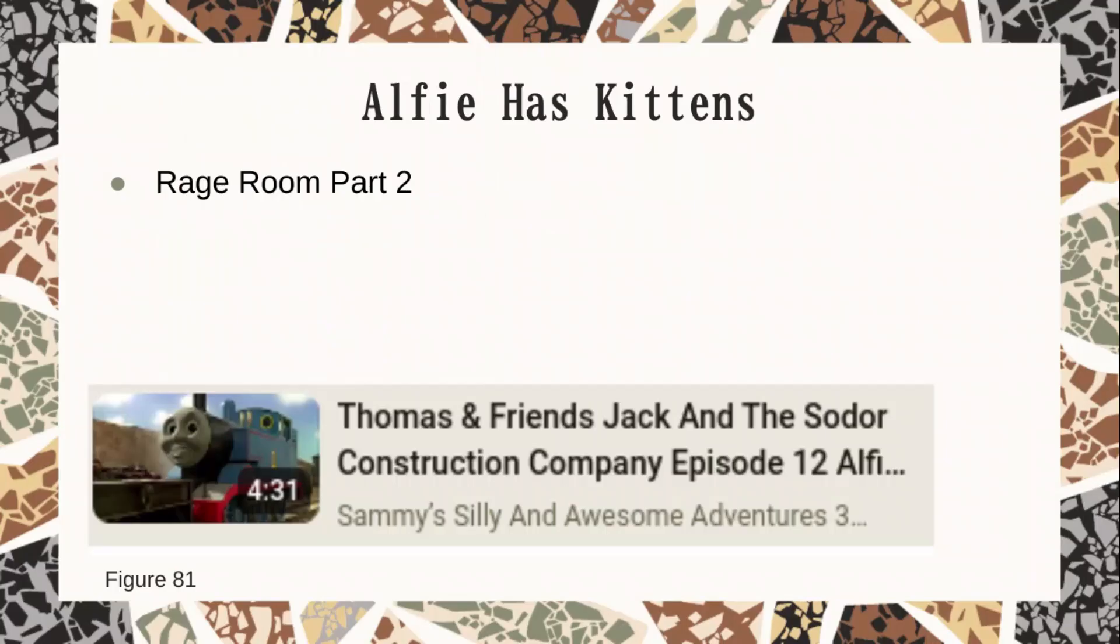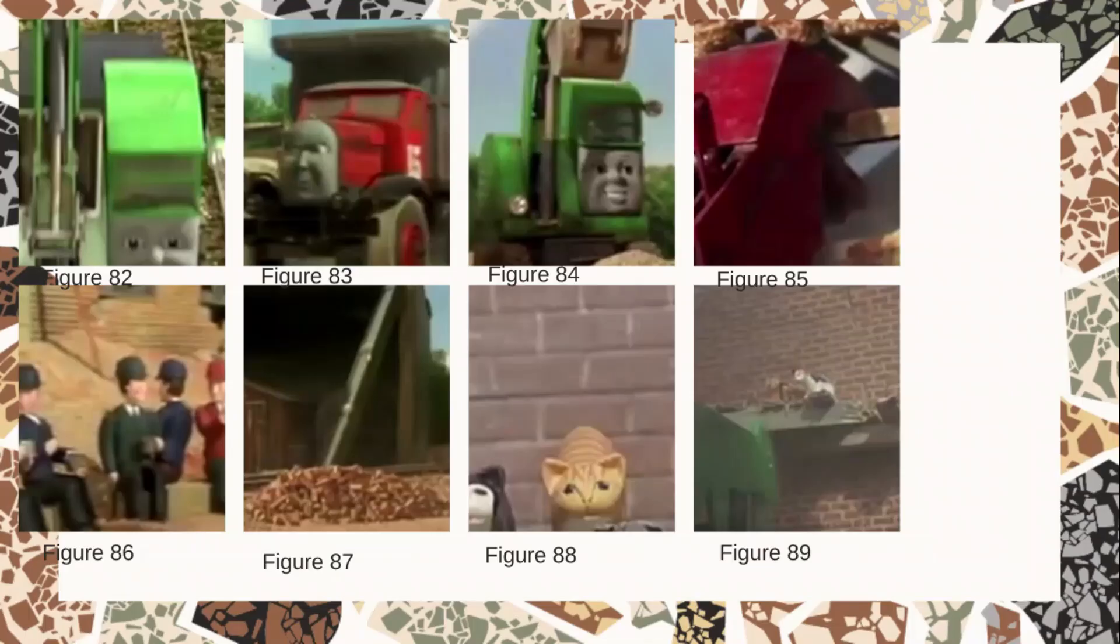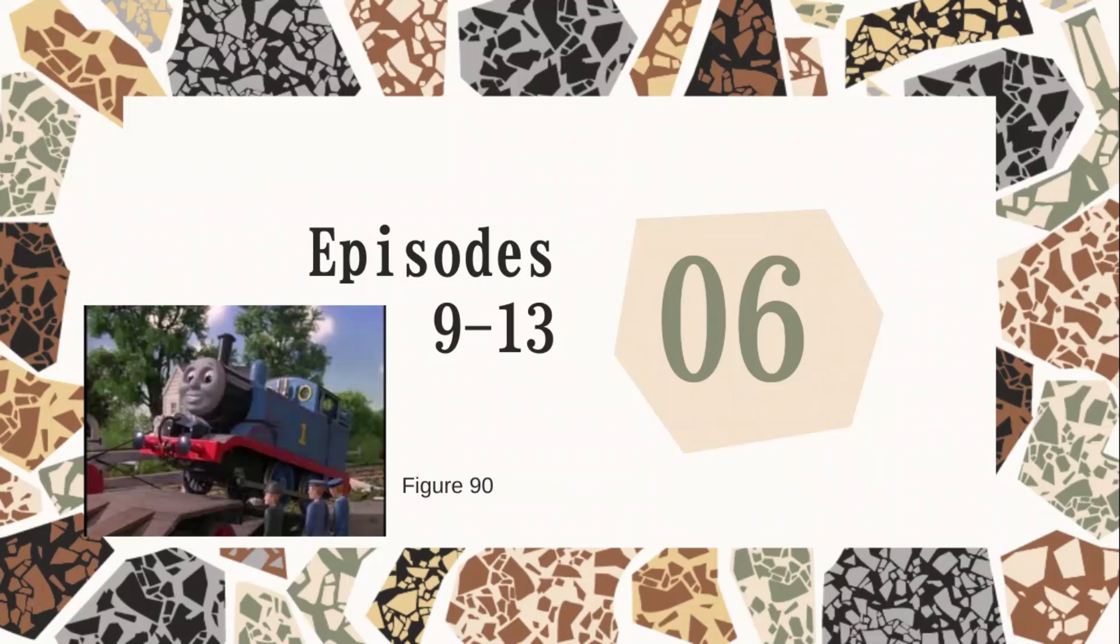US run episode eight: Alfie Has Kittens. Thomas is taking Alfie to a demolition site. Thomas doesn't understand the rage room, it's their thing because they're destroying more stuff again. Max is being mean. Max and Monty bully Alfie some more. Thomas tries to help Alfie because they're demolishing a building and Alfie can hear something. Max is mean about it. Turns out there's a cat family. Alfie uses his small size to protect the cats who are scared.